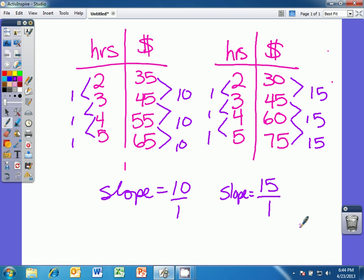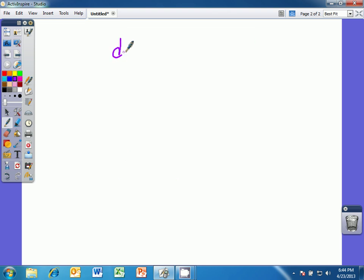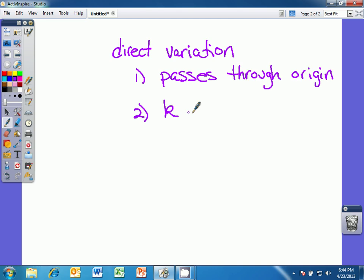But how do we determine if these tables represent direct variation functions? If we remember correctly, direct variation functions have to meet two requirements. One is it must pass through the origin, and it has a direct variation constant k, which is equal to y over x. If we manipulate that equation, we also see that a direct variation equation is written in the form y equals kx, where k is the slope of the line.